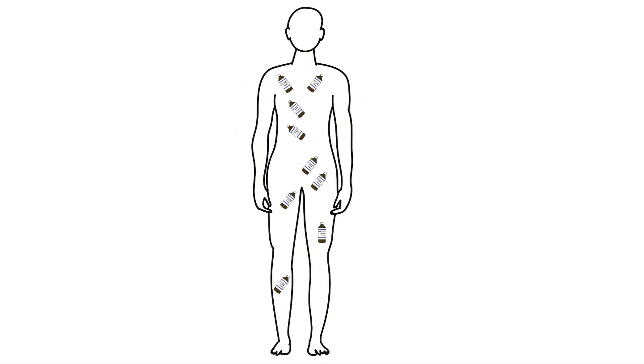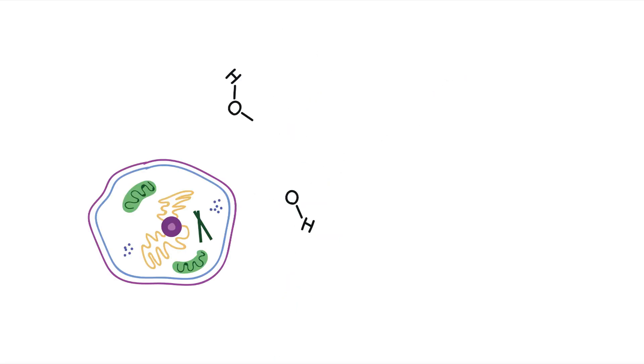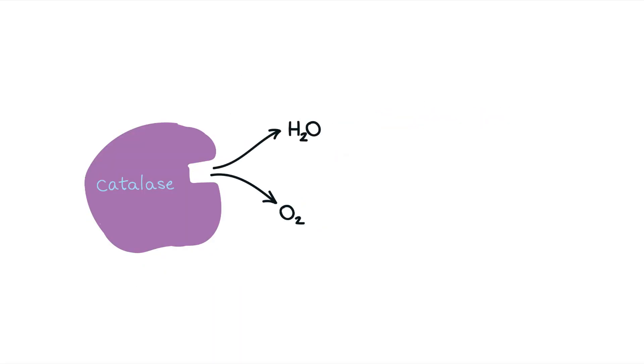Hydrogen peroxide can't do this in the body. When you ingest it, it's immediately broken down upon contact with your cells. This is because our cells contain a special enzyme called catalase, which breaks down the peroxide into water and oxygen. This explains why when you put peroxide on an open cut, it fizzles and bubbles up, because the cells are converting it into water and oxygen.